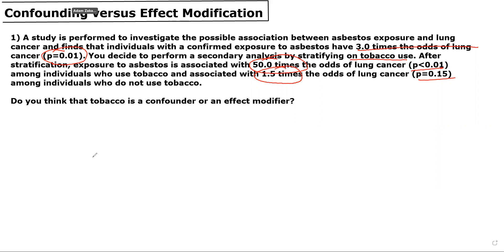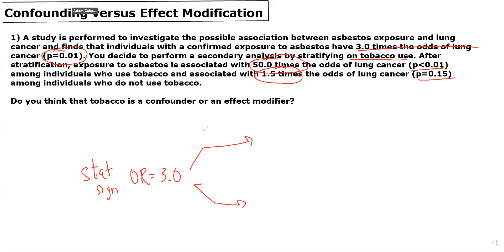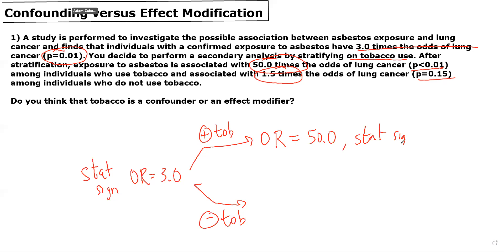We learned in the lecture that stratification can often let us know whether something is a confounder versus an effect modifier. So in this case, the unadjusted analysis was statistically significant with an odds ratio of 3.0. And we found that after we stratified to patients who use tobacco and patients who do not use tobacco, the odds ratio was strengthened among those who use tobacco to 50 — still statistically significant — and was weakened among those who do not use tobacco with an odds ratio of 1.5, which was no longer statistically significant.